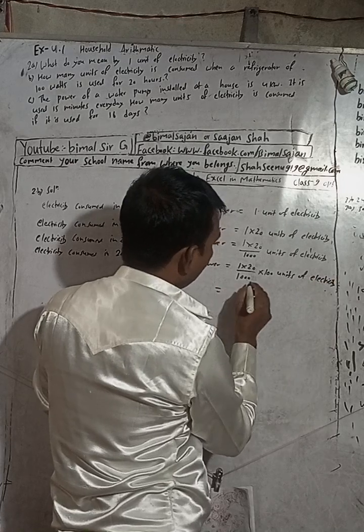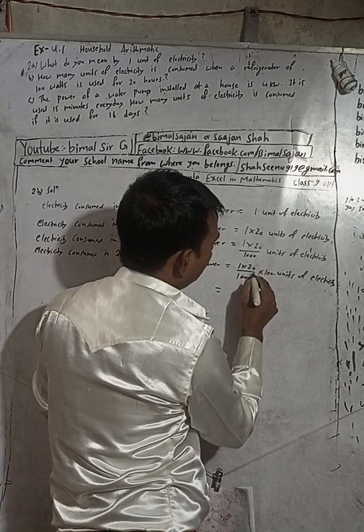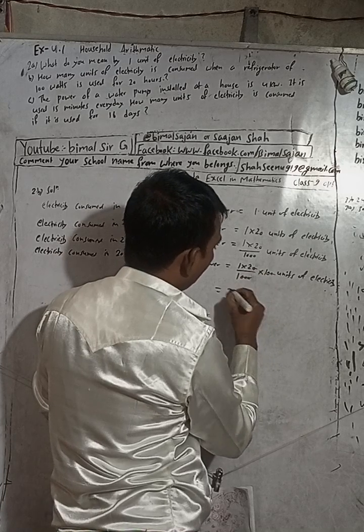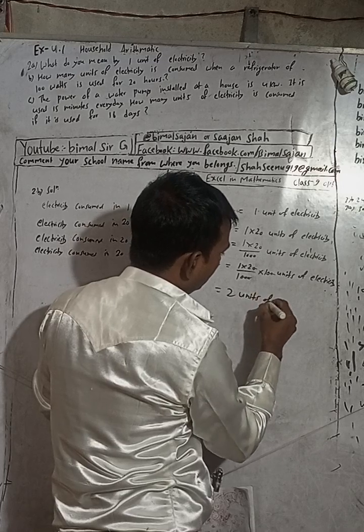Now you cancel this: one, two, three zeros, one, two, three zeros. Here this cancels. So there is how much? 1 into 2 equals 2 units. This is 2 units of electricity.